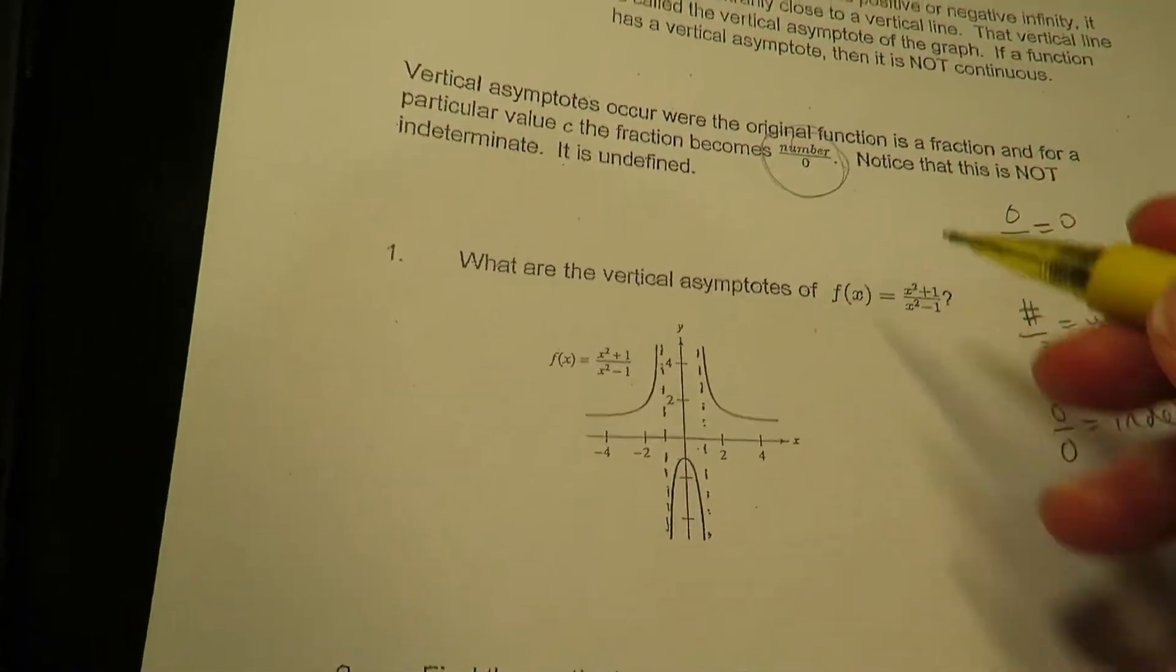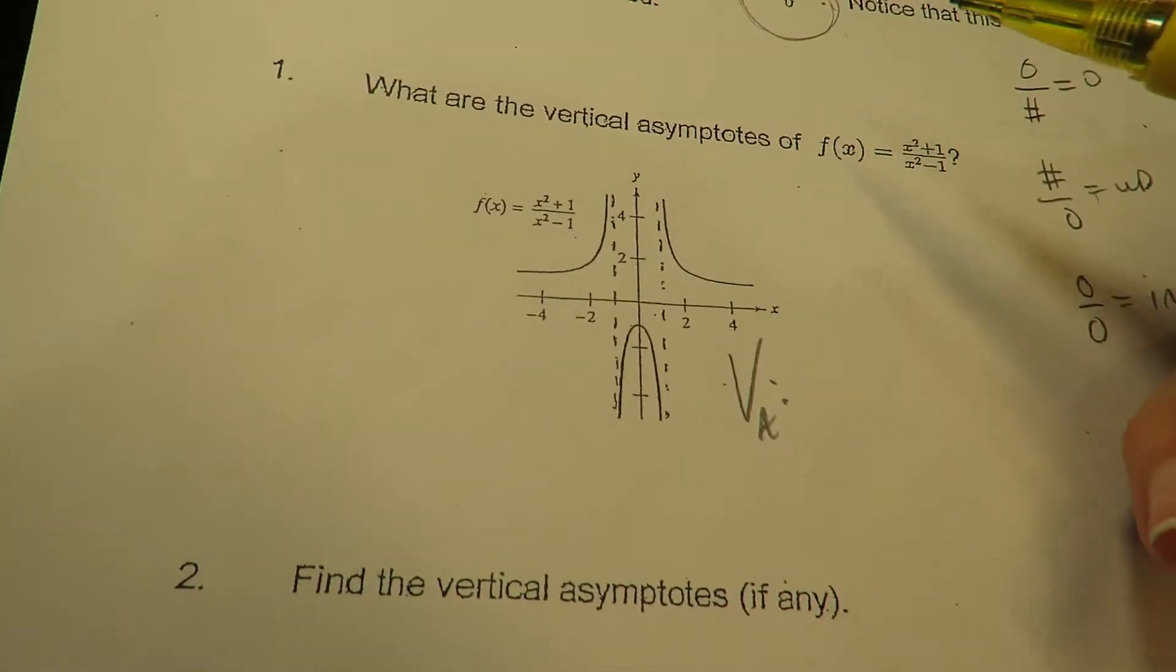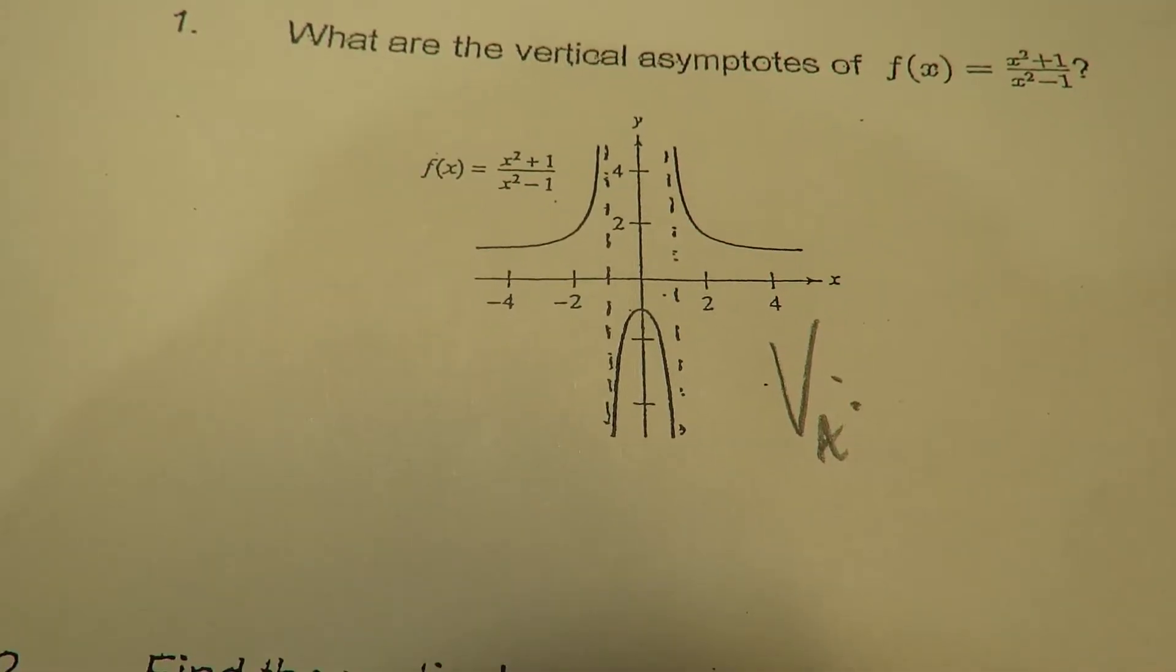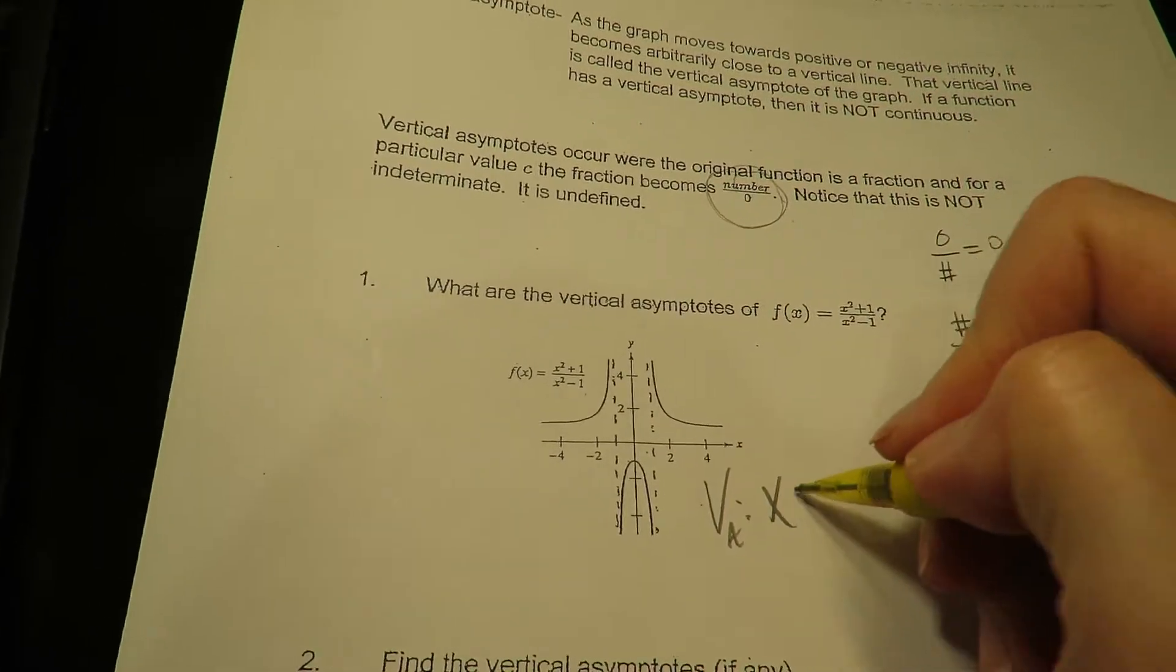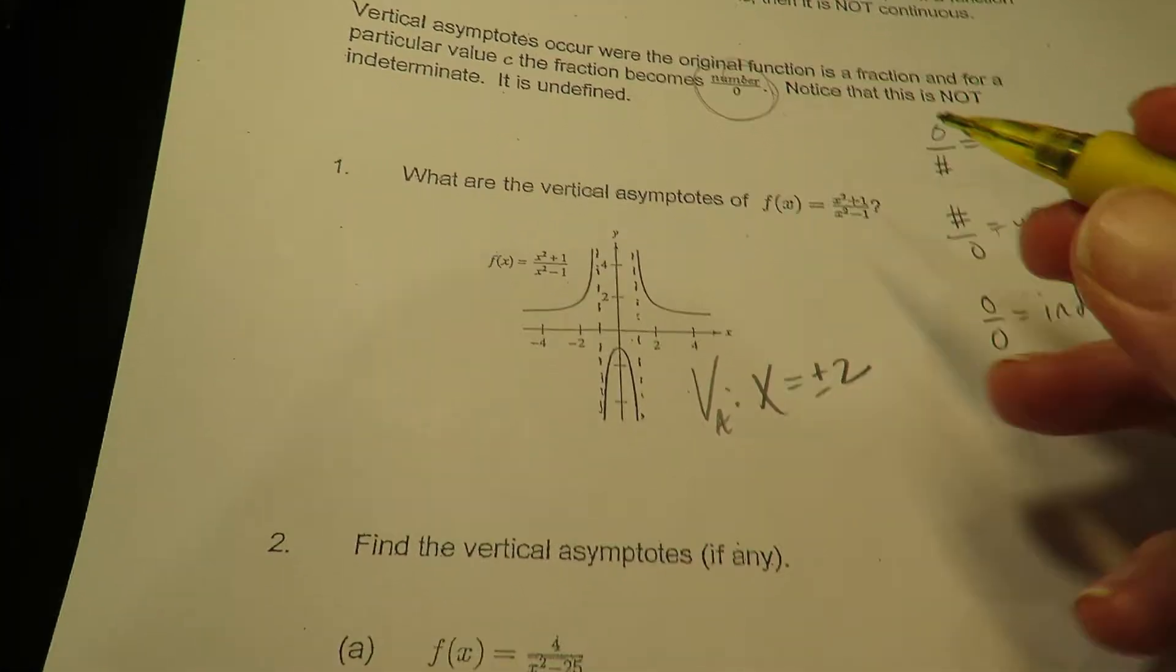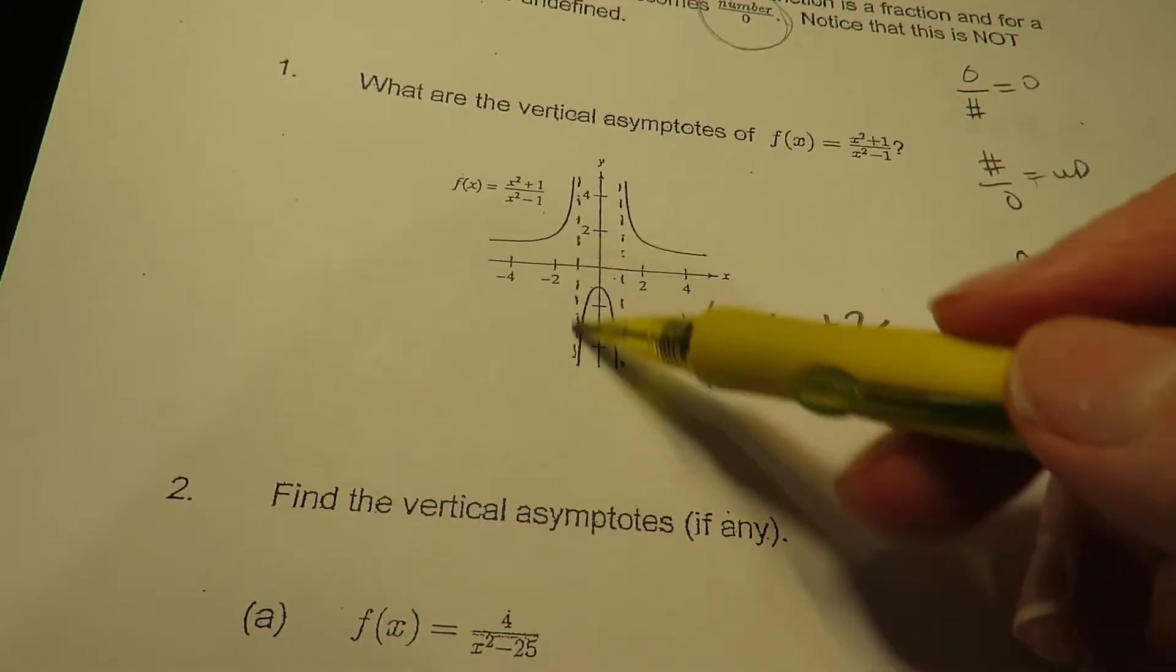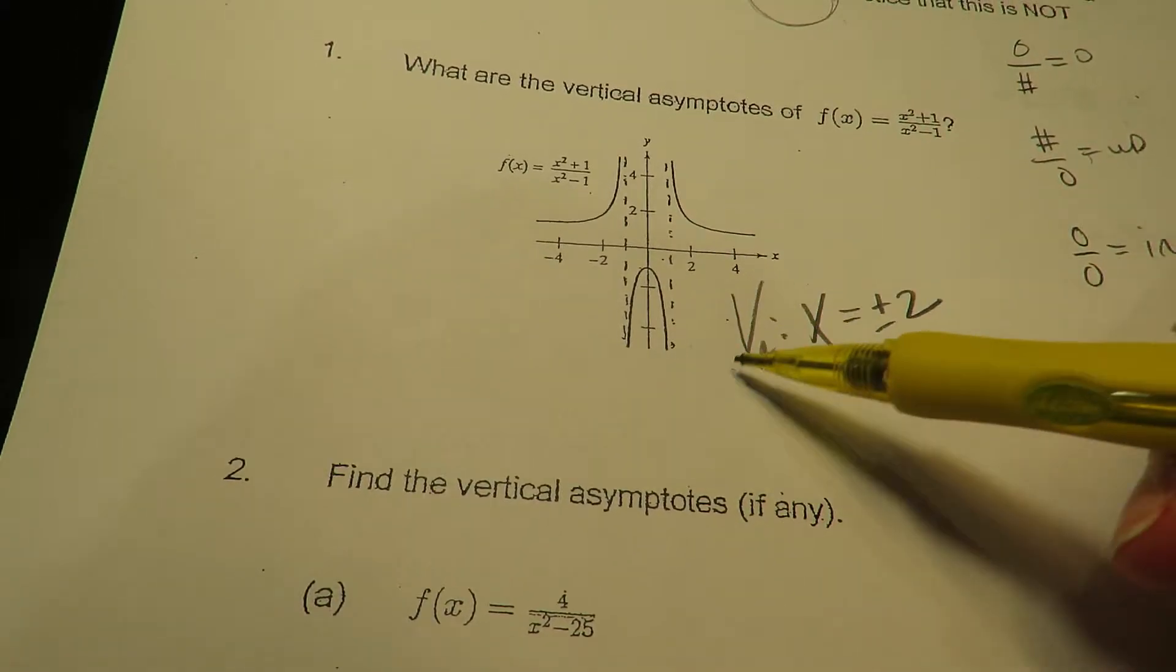Alright, let's find the vertical asymptotes here. Just by looking at this, can you see where the vertical asymptotes are? Alright, hopefully you see here and here, this is where x is plus or minus 2. So the function becomes unbounded at plus or minus 2.